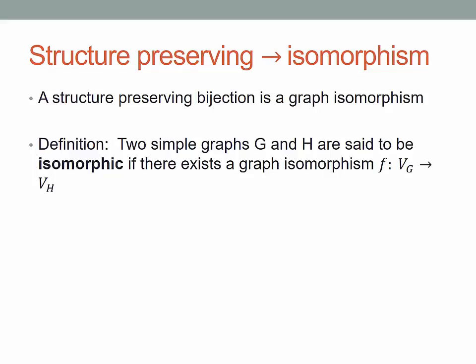So often if you're asked to verify that two graphs are isomorphic, you would have to define the mapping. You would say let f be, and actually define the mapping which is your isomorphism. And then that would verify that the graphs are isomorphic.